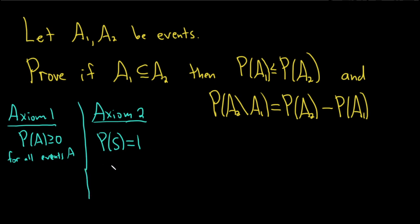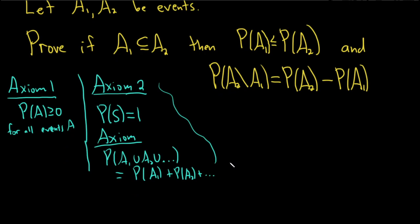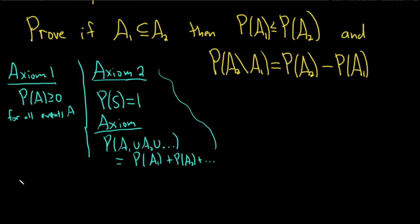And the third axiom of probability tells us that if we take the union of any number of mutually exclusive events, this is equal to the sum of the probability of these mutually exclusive events. So those are the three axioms of probability. Let's go ahead and try to prove this using these axioms.